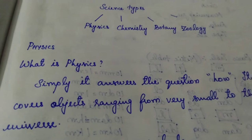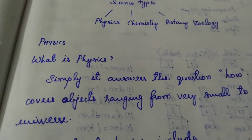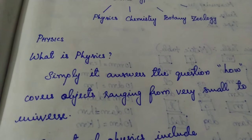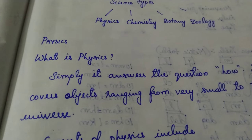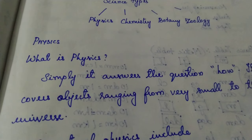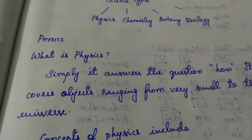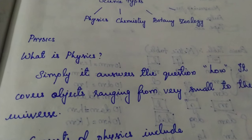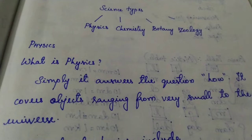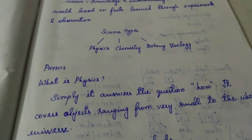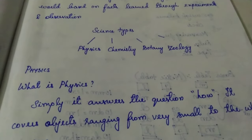Every morning we get up through an alarm. What gives the alarm a sound? Where does the sound come from? How does it propagate? Everything can be explained through physics. Another example: we are walking on a road — why aren't we falling down? Because it is due to friction between the surface of our feet and the surface of the road. Likewise, every concept starting from very small things to the whole universe can be explained through the concepts of physics.